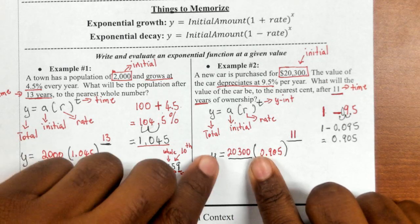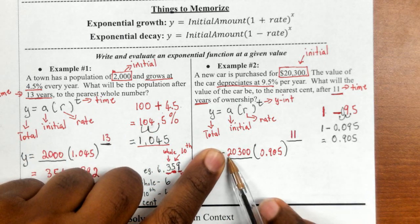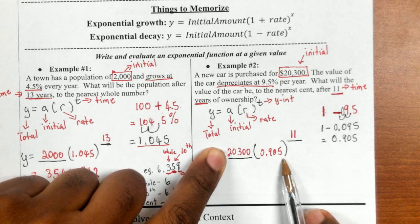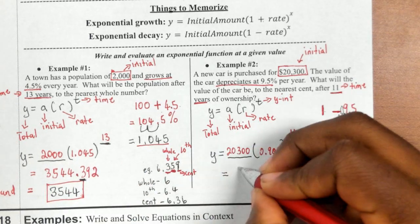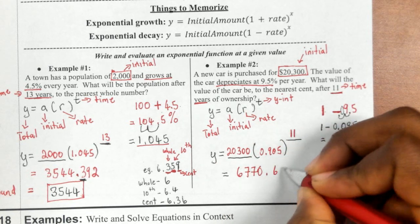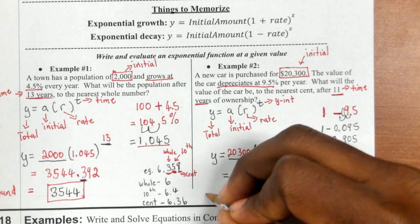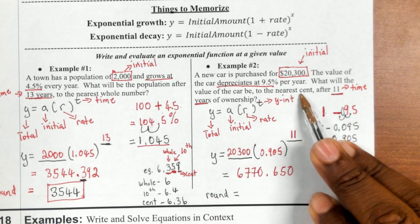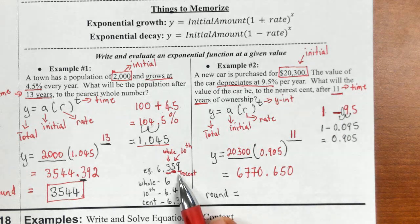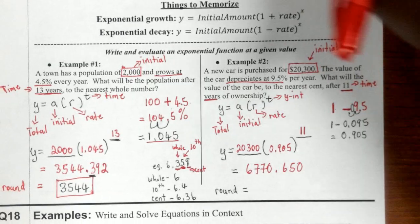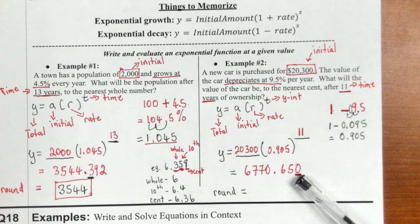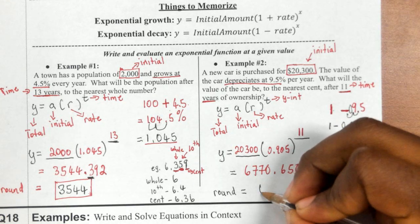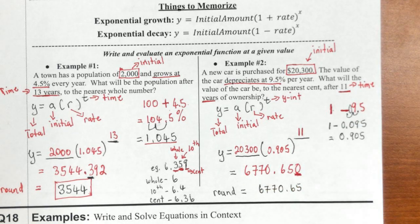Now I put everything in my calculator: 20,300 times (0.905) to the exponent 11. When you calculate that, you get 6,770.650. The question says to round to the nearest cent, so I look at the third number after the decimal point — that's a 0, which is not five or larger, so it does not round up. Everything in front of what I underlined stays the same, and my answer is $6,770.65.